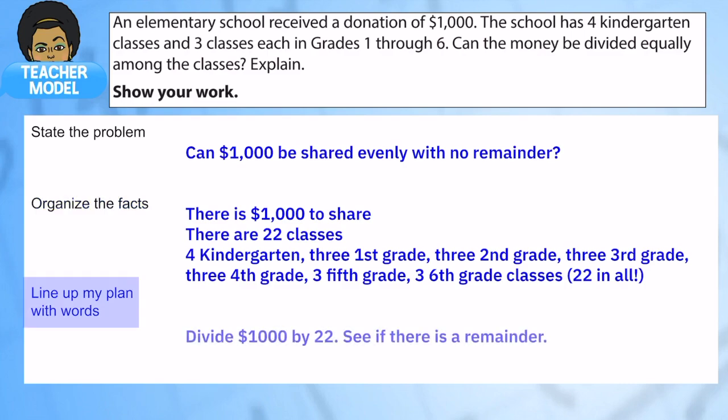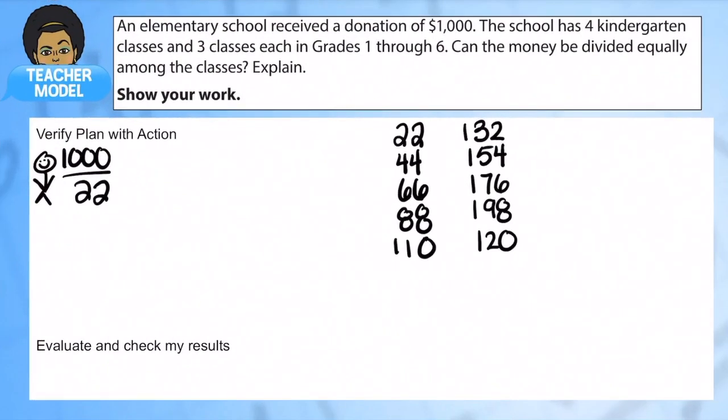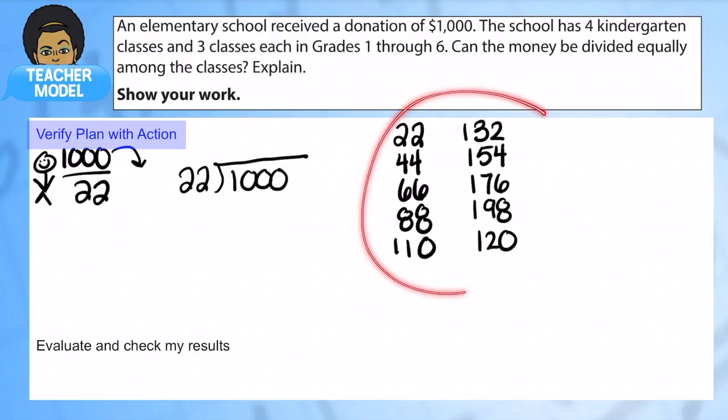So here's our plan. We're going to divide 1,000 by 22 and see if there is a remainder. We're going to divide 1,000 by 22. Remember, this makes 1,000 fall inside the house.